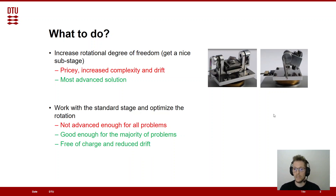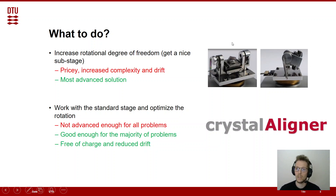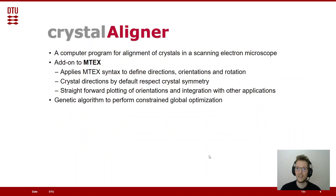An alternative is to work with the standard stage — with what we have in the microscope by default — and optimize our rotations. This may not be advanced enough for all problems, and in that case we might need a substage, but it's actually good enough for the majority of problems. Crystal Aligner is free of charge, so you don't have to pay for an expensive stage, and by not having the additional stage we may be able to reduce drift.